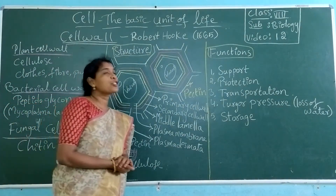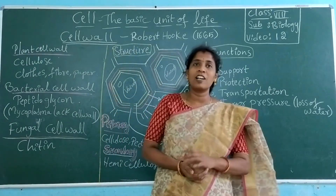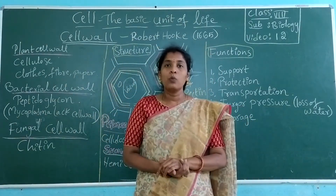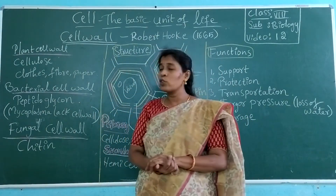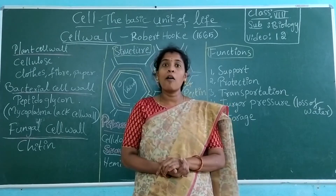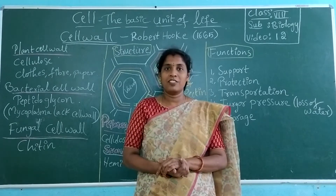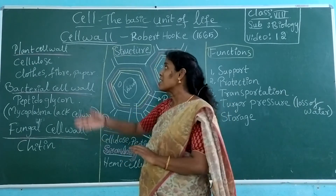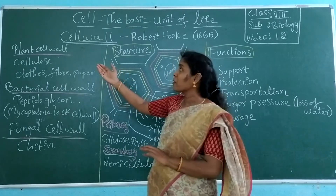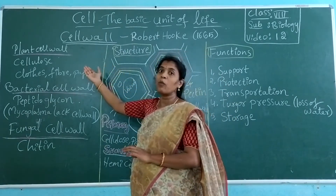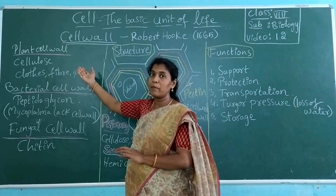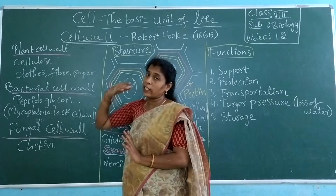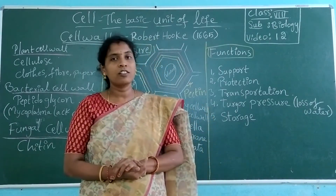Cellulose is also a polysaccharide. In our last class we discussed that cellulose is a complex sugar, and in a plant cell, the cell wall is made by cellulose. So what is the structure of this cell wall?